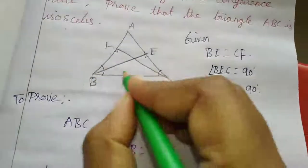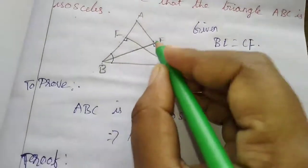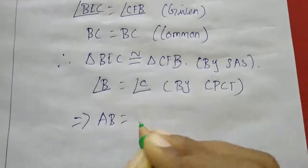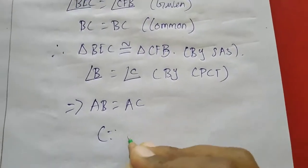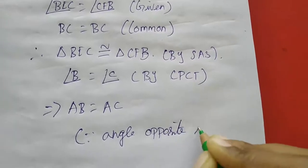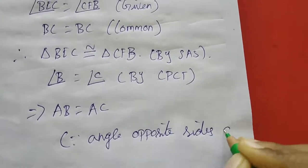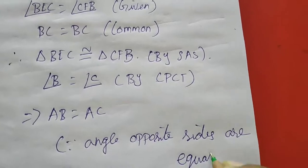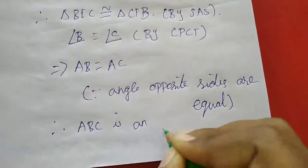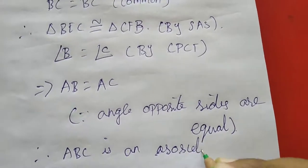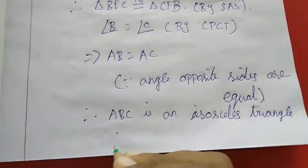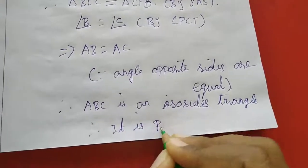This we proved. Now, the angle opposite sides are equal, so AC equal to AB, which implies AB equal to AC, because angle opposite sides are equal. Therefore two sides are equal, so ABC is an isosceles triangle. It is proved.